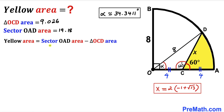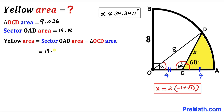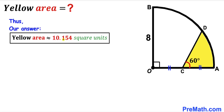Now we are going to calculate the area of the yellow shaded region. We already found the sector area and the triangle area, so: 19.18 minus 9.026 equals 10.154 square units. So the area of this yellow shaded region turns out to be approximately 10.154 square units. Thanks for watching and please don't forget to subscribe to my channel for more exciting videos.